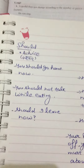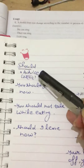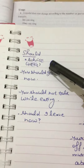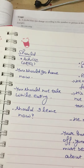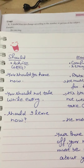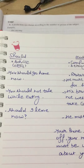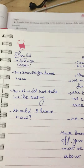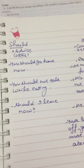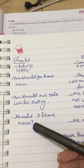As you can see, 'should' is used when we give advice. For example: 'You should go home now.' The advice can be taken or cannot be taken — it is the wish of the person. Another example: 'We should not talk while eating.' And 'Should I leave now?' — this is also advice.